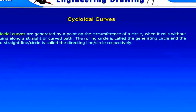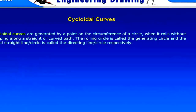Cycloidal curves are generated by a point on the circumference of a circle when it rolls without slipping along a straight or curved path. The rolling circle is called the generating circle, and the fixed straight line or circle is called the directing line or circle respectively.